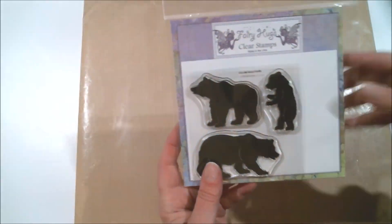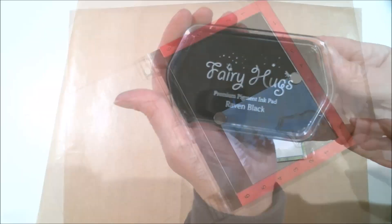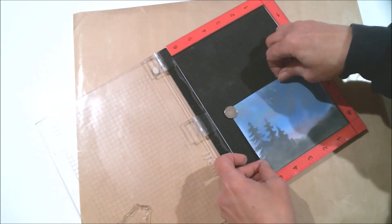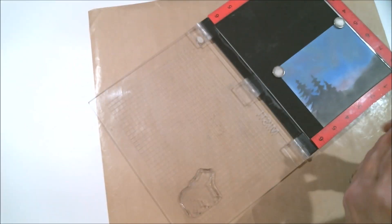With that silhouette background completed, it's time to add the bear to the picture. I'm using my Misty stamping platform and Fairy Hugs Premium Pigment ink in Raven Black.